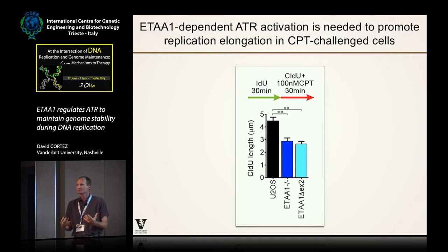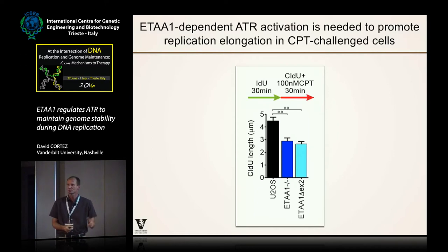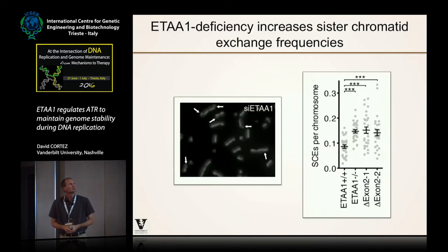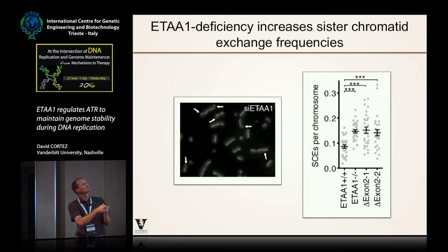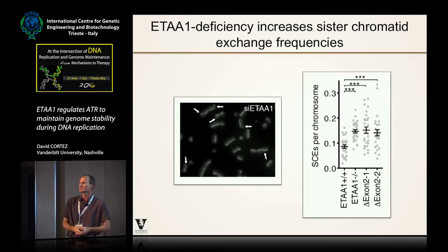We also looked at replication stress response phenotypes. At the ability to synthesize DNA during CPT challenge by single-molecule analysis, ETAA1-deficient cells are much less capable of elongating in the presence of CPT compared to wild-type controls. The exon-2 deletion — just mutating the ATR activation domain — also looks pretty much indistinguishable from the null. We also see evidence of chromosome instability, including increased sister chromatid exchanges. There's an increase by siRNA knockdown of ETAA1, and also in the knockout cell lines; two different clones of the exon-2-deleted cells also have increased sister chromatid exchanges — modest compared to Bloom, but significant.